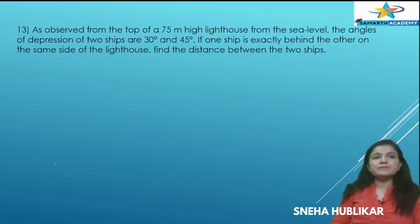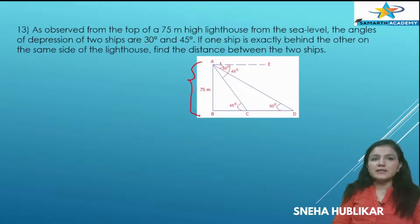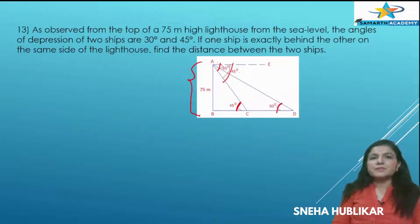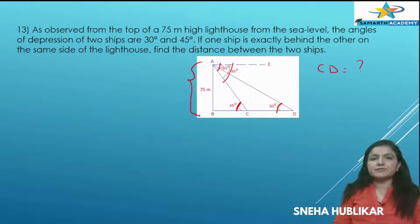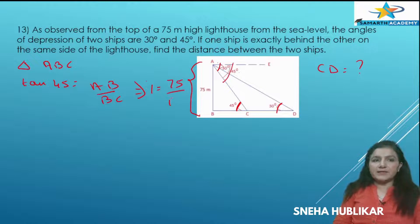Question 13: As observed from a 75-meter lighthouse at sea level, the angles of depression of two ships are 30 degrees and 45 degrees. Using alternate angles, these become 45 degrees and 30 degrees respectively. If one ship is exactly behind the other, find the distance between the two ships — that is, find CD. In triangle ABC, tan 45° equals AB by BC equals 75 by BC, so BC equals 75 meters.